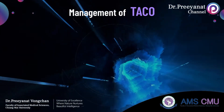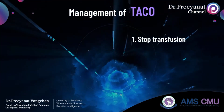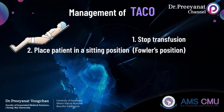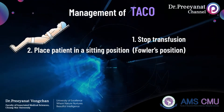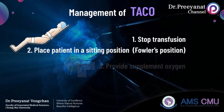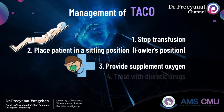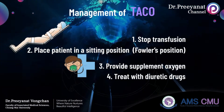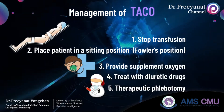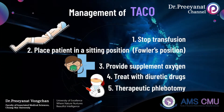When TACO is suspected, immediately stop the transfusion. Place the patient in a sitting position, also called Fowler's position, to release pressure and relieve severe headache. Provide supplemental oxygen and reduce intravascular volume with diuretic drugs. If symptoms are still progressing, TACO is confirmed, and therapeutic phlebotomy can be performed.